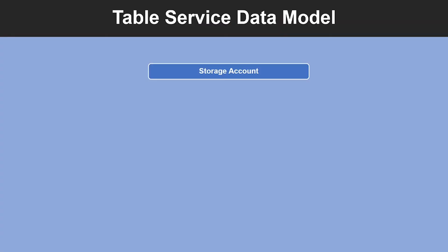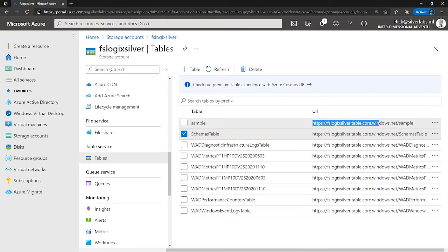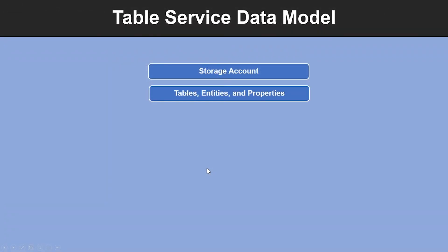Now let's look into different types of the table service data model. First is Storage Account — a storage account is a globally unique entity within the storage system and must always be specified in the request URL. This is your global storage account URI and this is how you will access the table service. Second, tables store data as a collection of entities. Entities are similar to rows — an entity has a primary key and a set of properties, and a property is a name-type-value pair similar to a column.